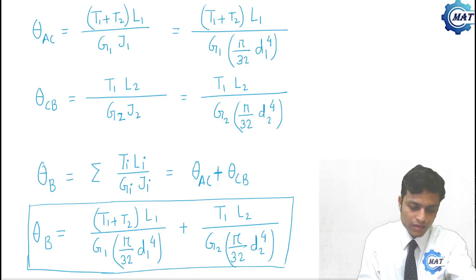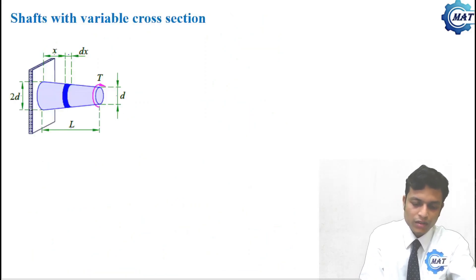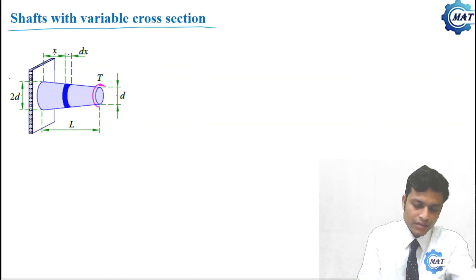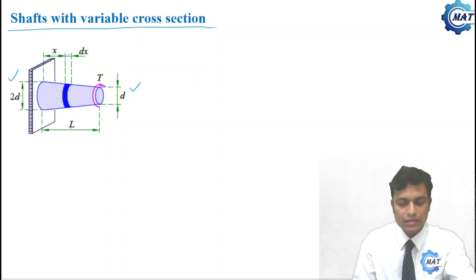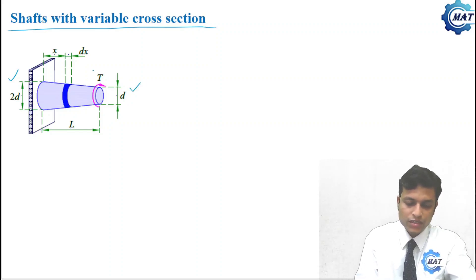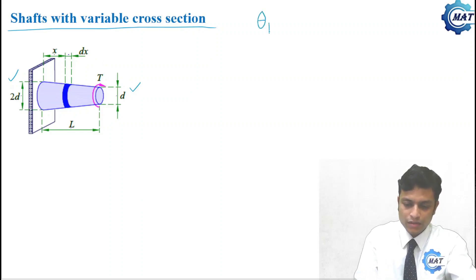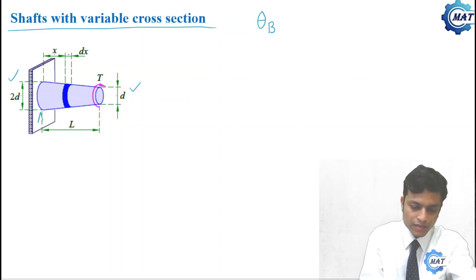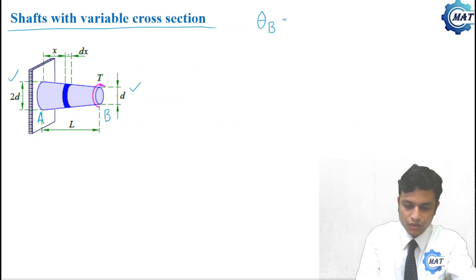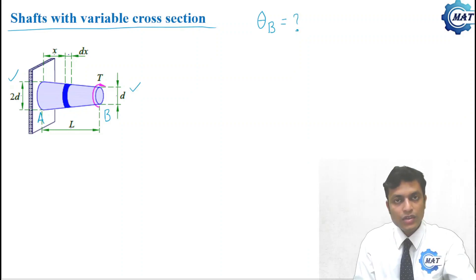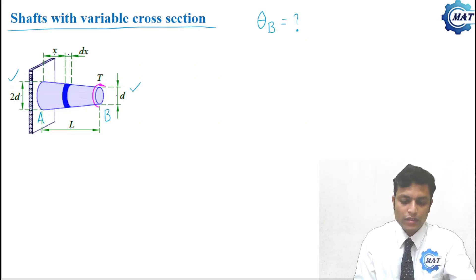Now let us consider another situation: shafts with variable cross section — a tapered shaft. The diameter at the fixed end A is 2D and at the free end B is D. It is subjected to a torsional moment T. Since the cross section is not uniform, we cannot apply the equation of torsion directly.